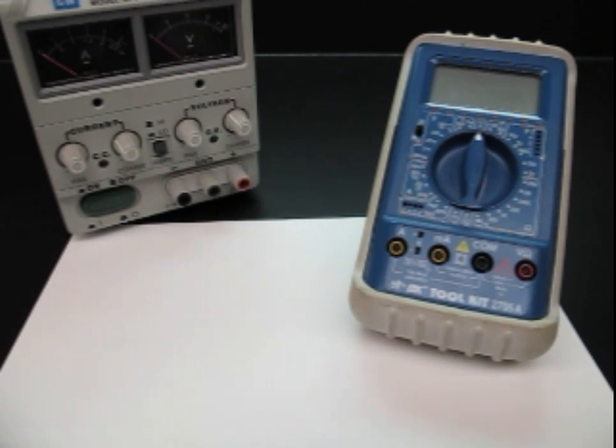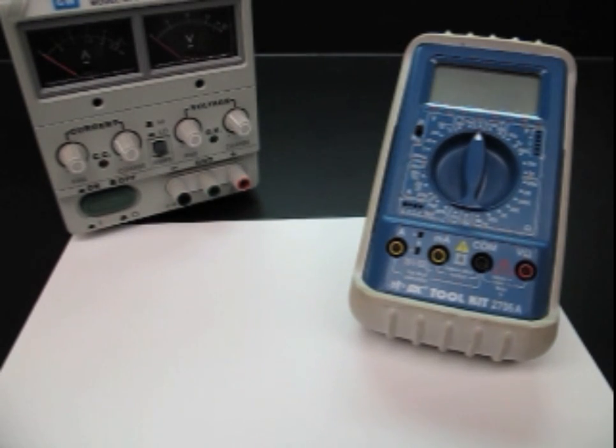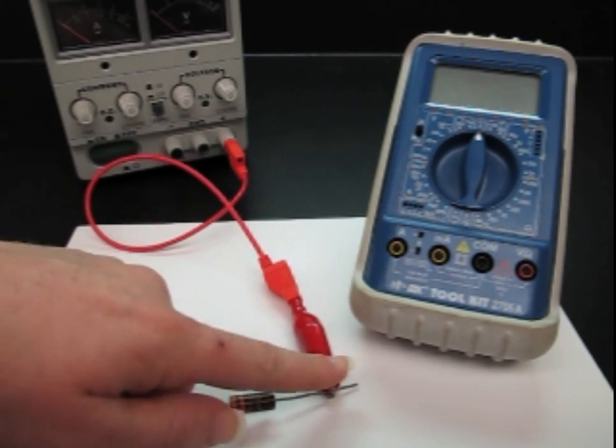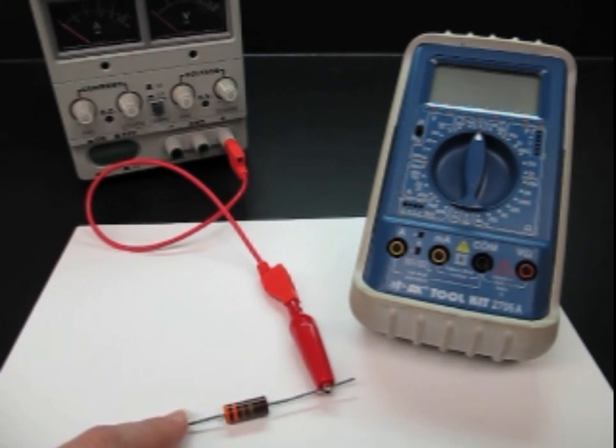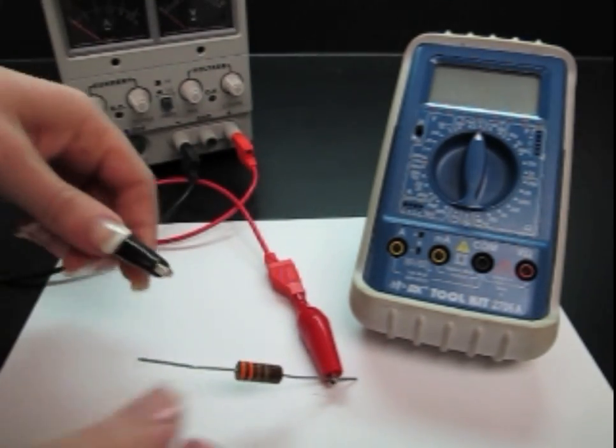So real quick I'm going to show you how to take a voltage reading as well as a current reading. It's very important that you know what you're reading because it is a different setup with your multimeter. For a voltage today I'm just going to set up a real simple circuit. So it will have power running from the power supply to the resistor across the resistor and then back to the power supply.